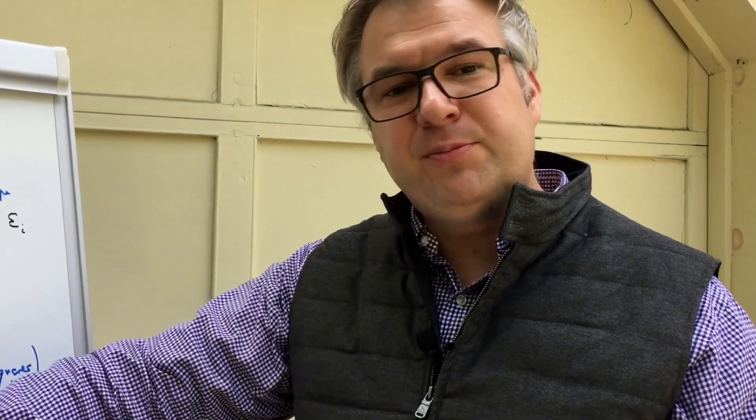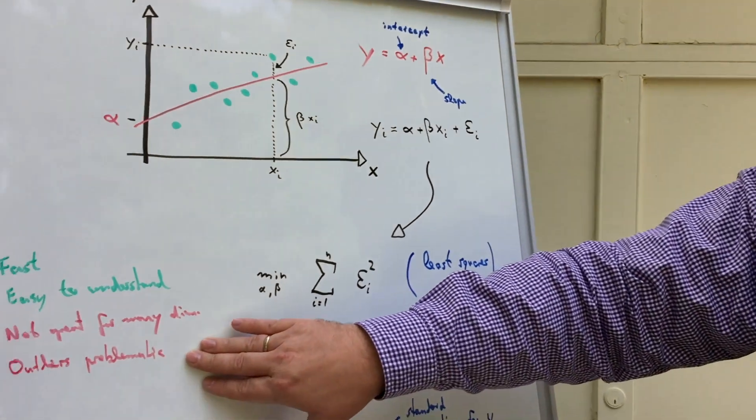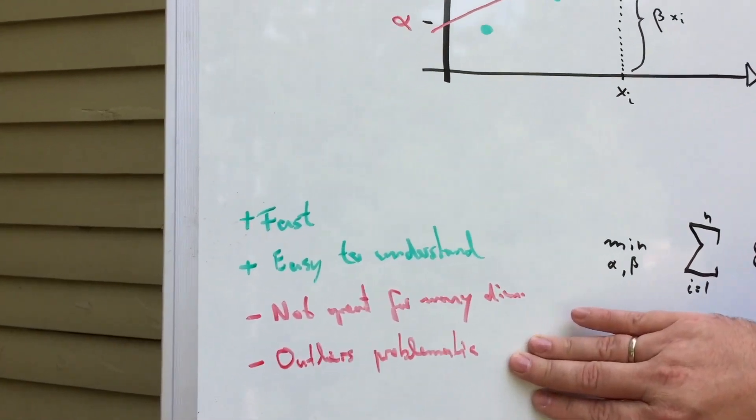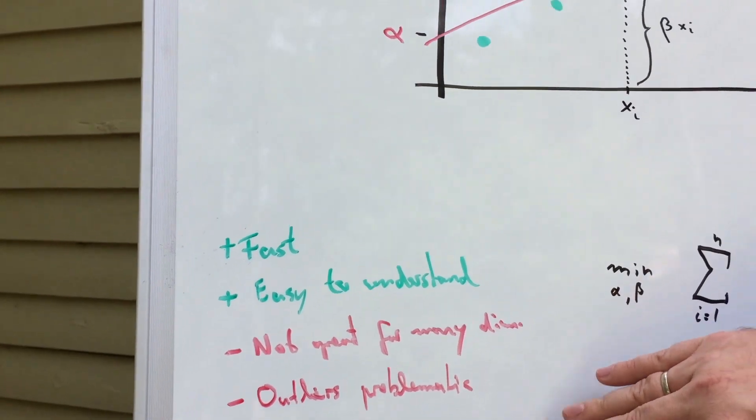It's not really great for many dimensions. If you really have a high number of dimensions, techniques like support vector machines for example are much better. And also another thing which is problematic are outliers. Outliers can really screw up the curve. I can actually show this easily to you here on the wooden board again. So let's actually go over here.